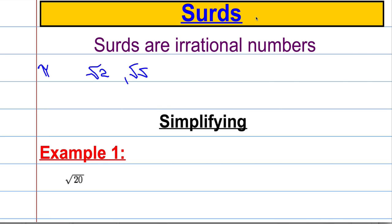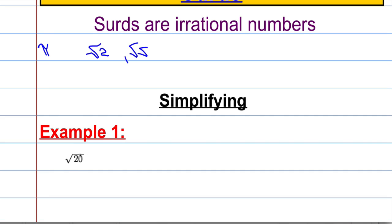But we're going to start out by looking at simplifying. Let's have a look at this first example. I want to simplify this surd, so I can actually write this in another form, a little bit like simplifying a fraction. What I'm going to do is look at the number 20 underneath and ask myself: are there two numbers I can multiply together to make 20, where one of those numbers is a square number? So I can say that root 20 is the same as root 4 times 5, because 4 times 5 is 20.